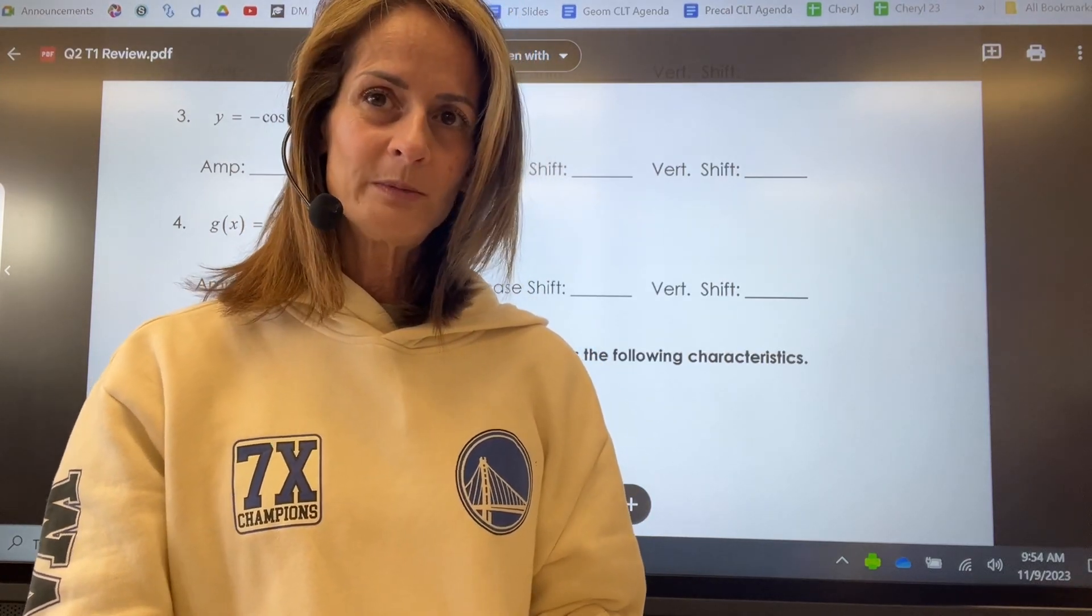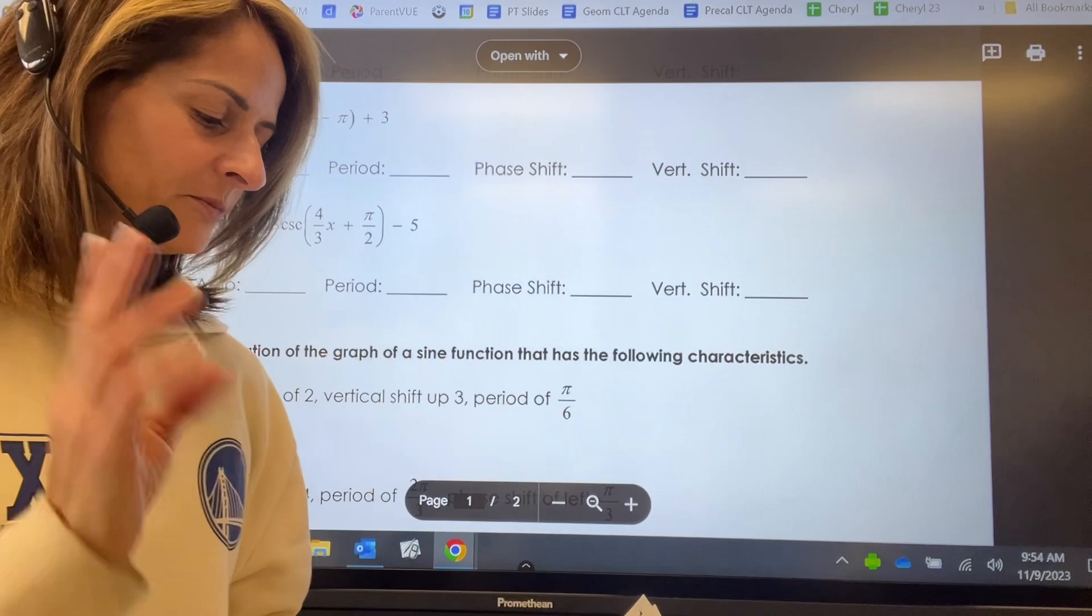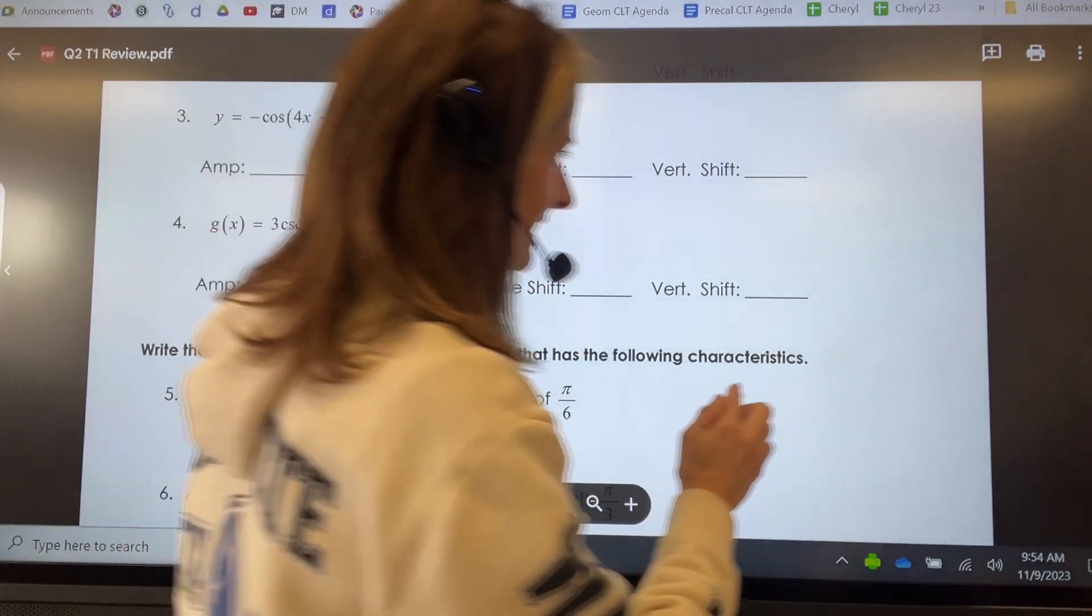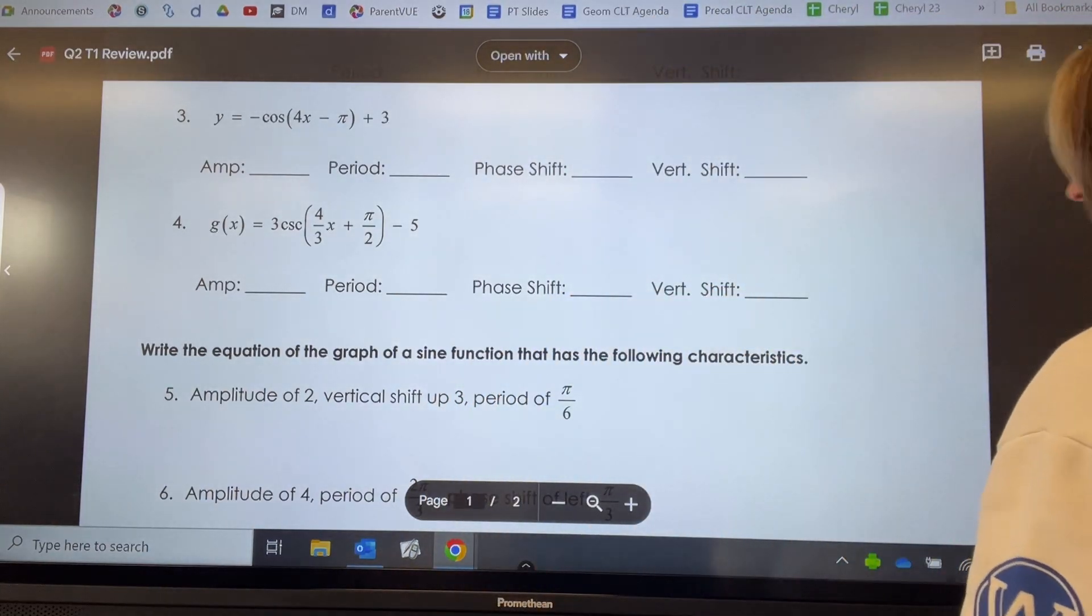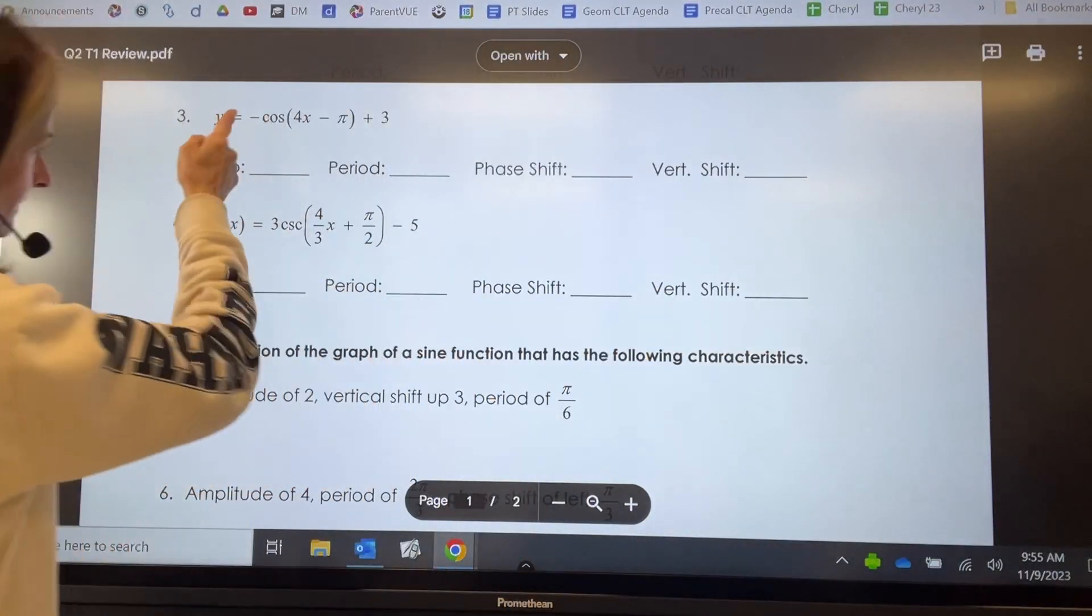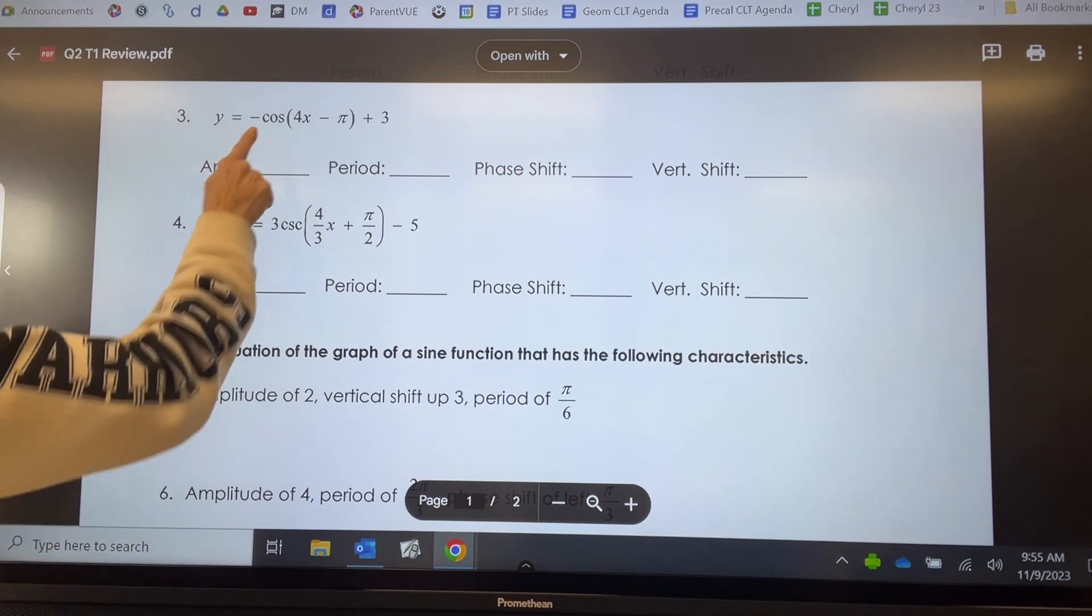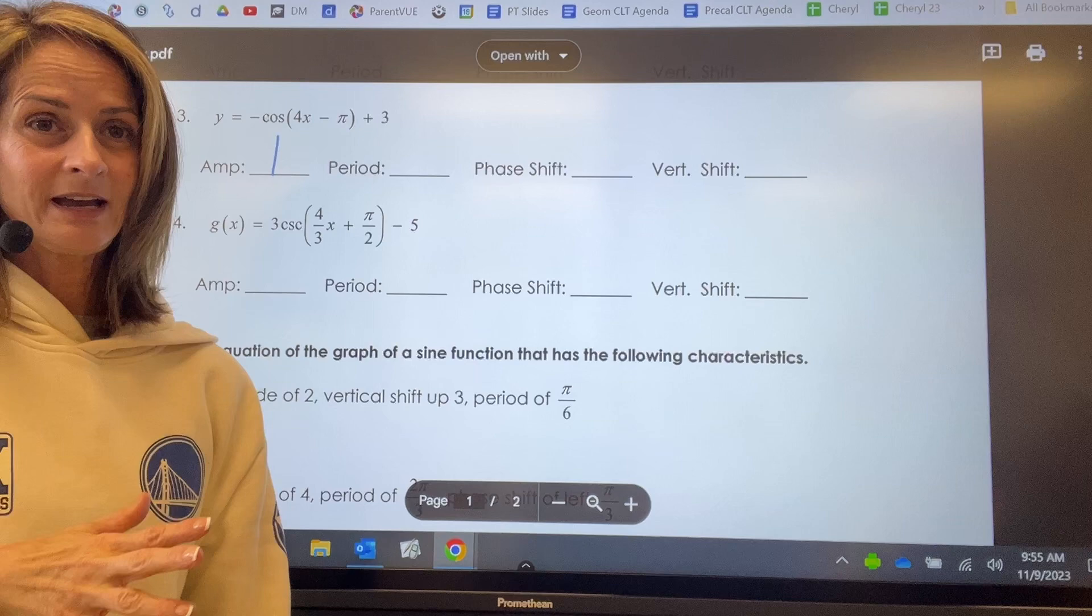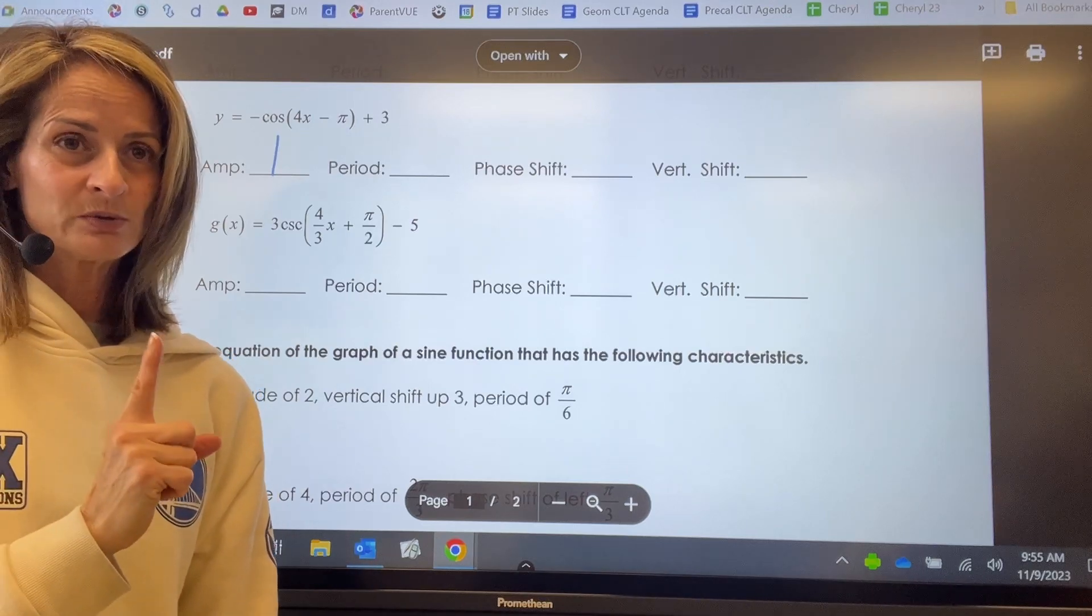So we're going to start with problem number three. We've already done problems one and two, so we kind of have an idea about what to do, and you guys have tried these problems. The amplitude is the absolute value of that number in front. We have a negative one in front of our cosine here. The amplitude is going to be one, the absolute value of one. On your test, don't select negative one. It's one, the amplitude is one.